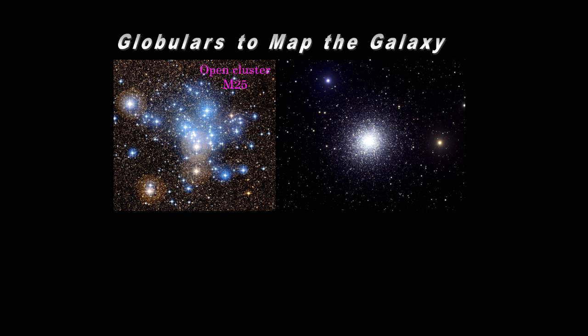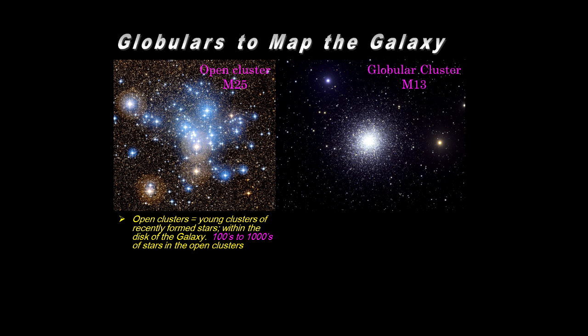And we've already encountered the clusters, but another quick review. We have the open clusters, the young clusters, the young stars, recently formed, bright blue stars you can see there, hundreds to thousands in any given open cluster. They will eventually disperse. They're not gravitationally bound.